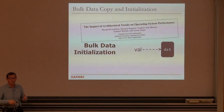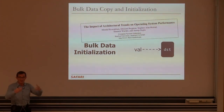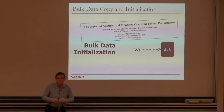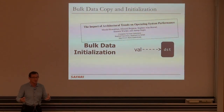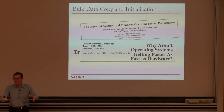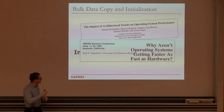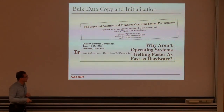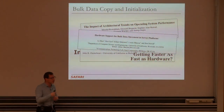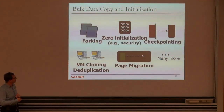Operating systems do a lot of data copy and initialization. Whenever you fork a process, for example, you copy data to the other process. For security, Windows and Linux maintain zero page pools — pages zeroed out so no process leaks information to another. There are also other papers asking why operating systems aren't getting faster as fast as hardware. Many works discuss the need for hardware support for bulk copy and initialization — including ones from Intel. Bulk data copy and initialization is a primitive used by forking, page initialization for security, checkpointing, VM cloning, deduplication, and page migration.